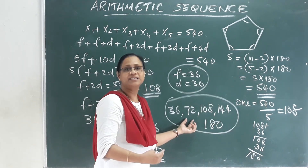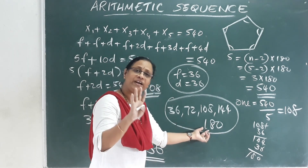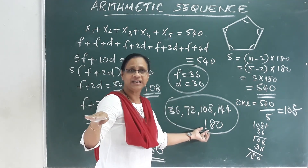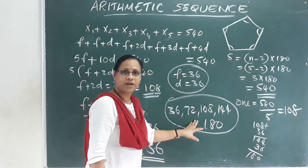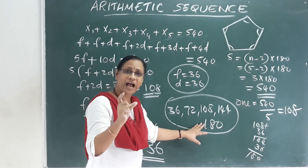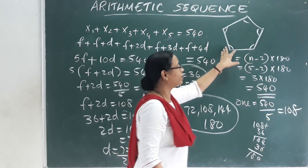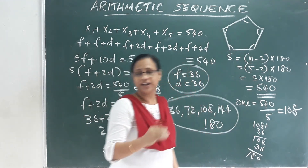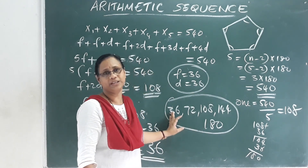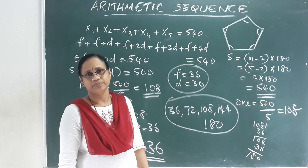These five angles cannot be used in a pentagon because 180 degrees is a straight line, not a proper interior angle for a closed curved figure. That is why we say the smallest angle cannot be 36 degrees — it must be greater than 36 degrees.